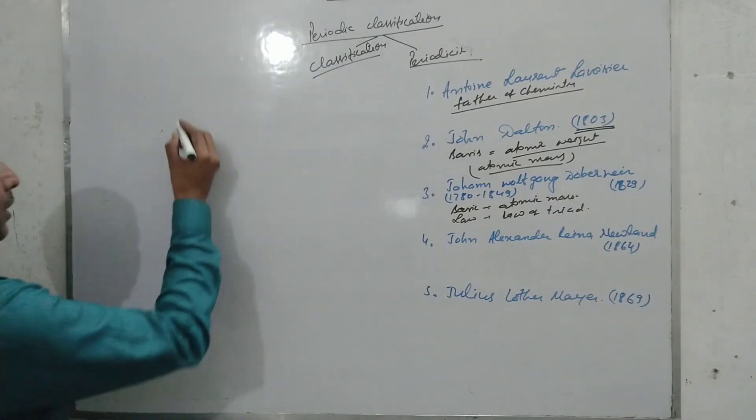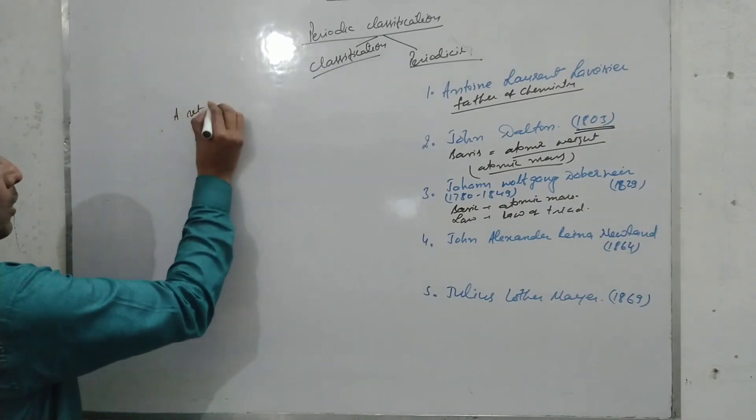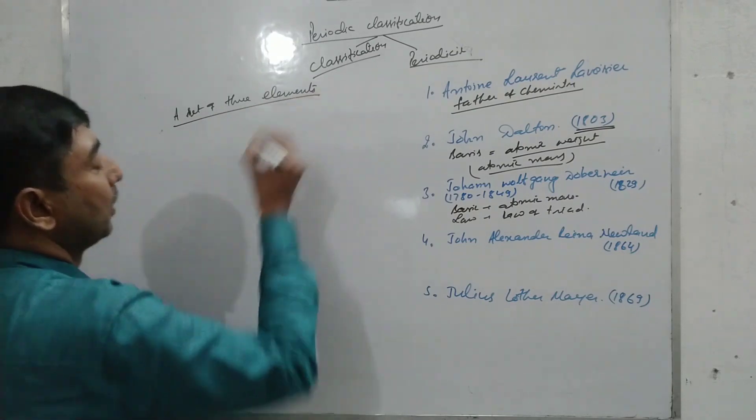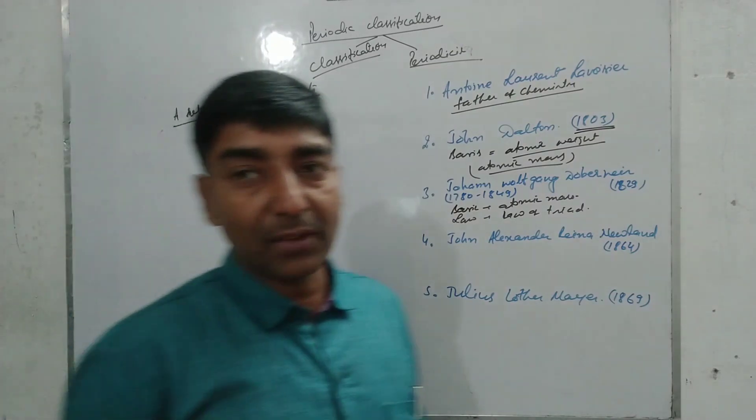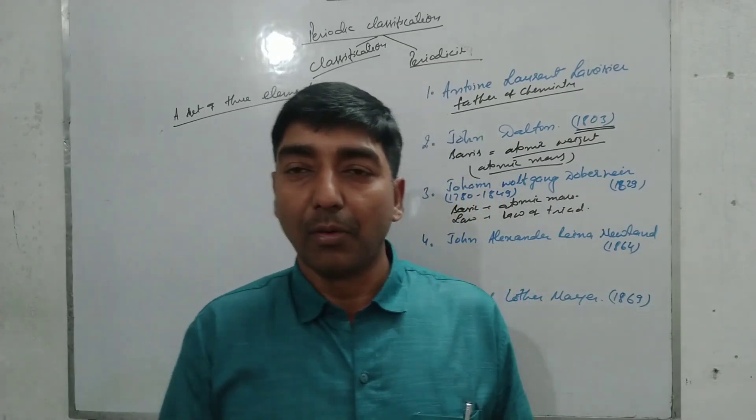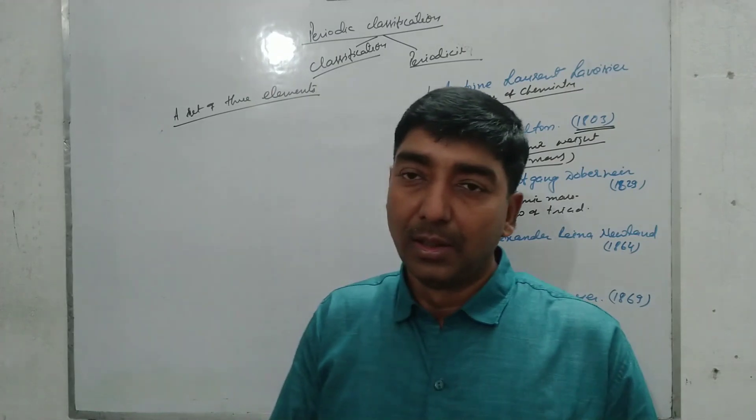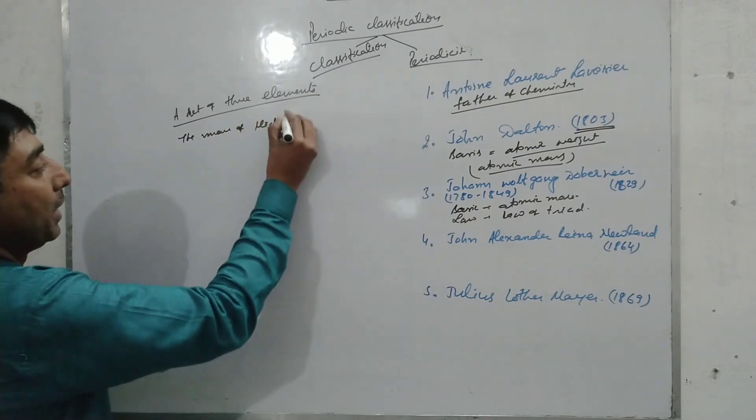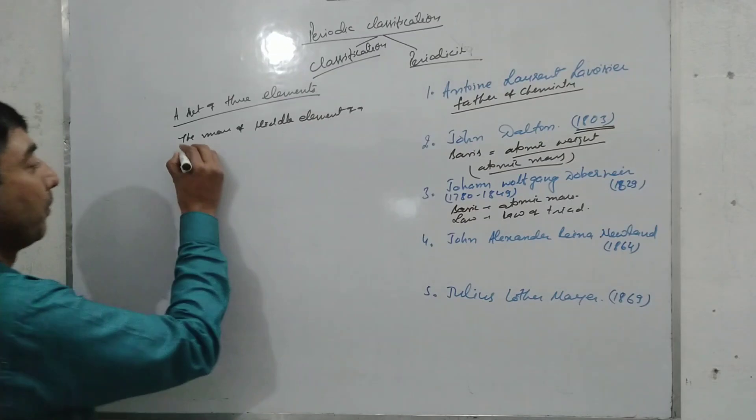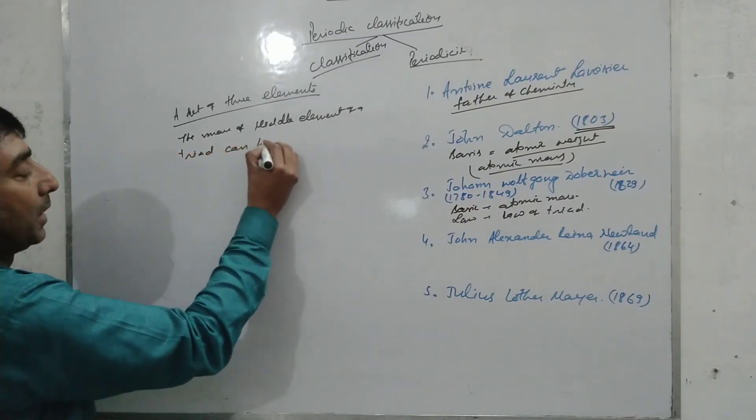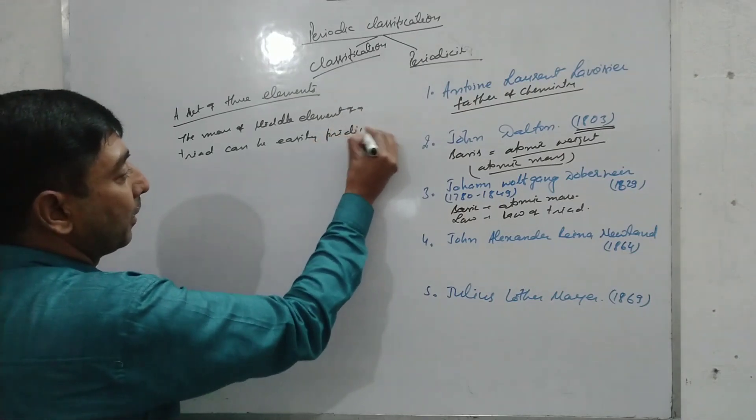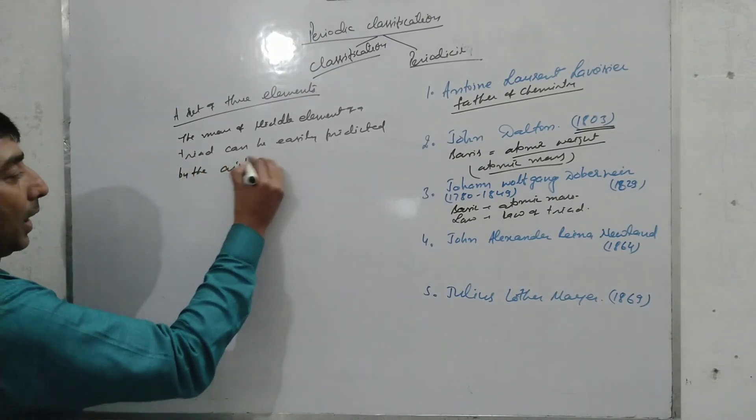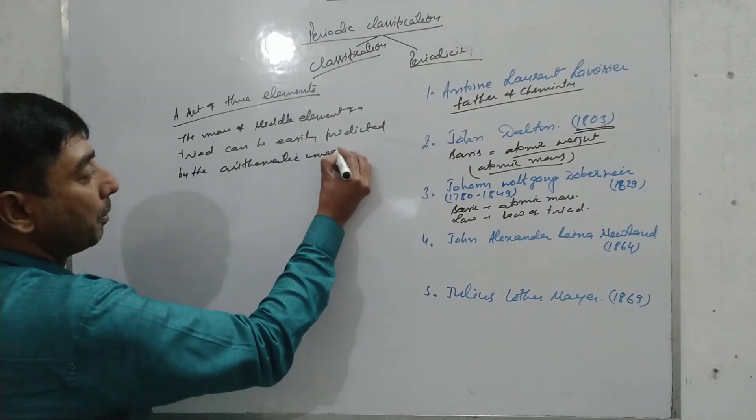Triad means a set of three elements. This law states that the mass of middle element can be predicted if we have the knowledge of mass of first and third element. According to this law, the mass of middle element of a triad can be easily predicted or determined by the arithmetical mean.